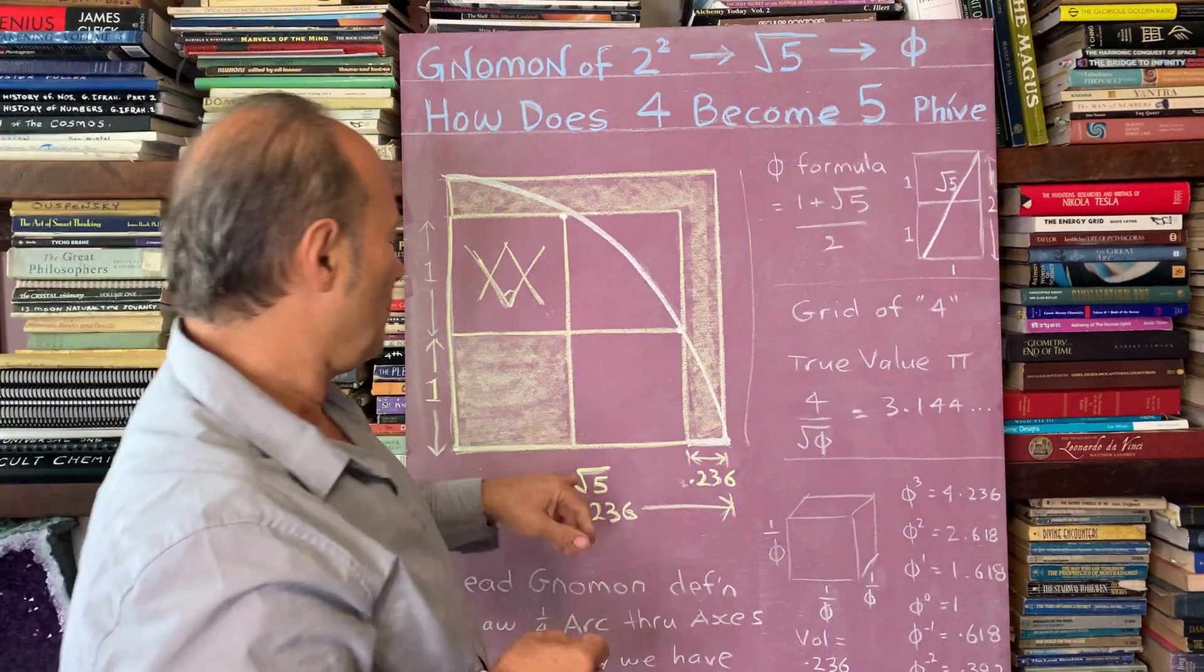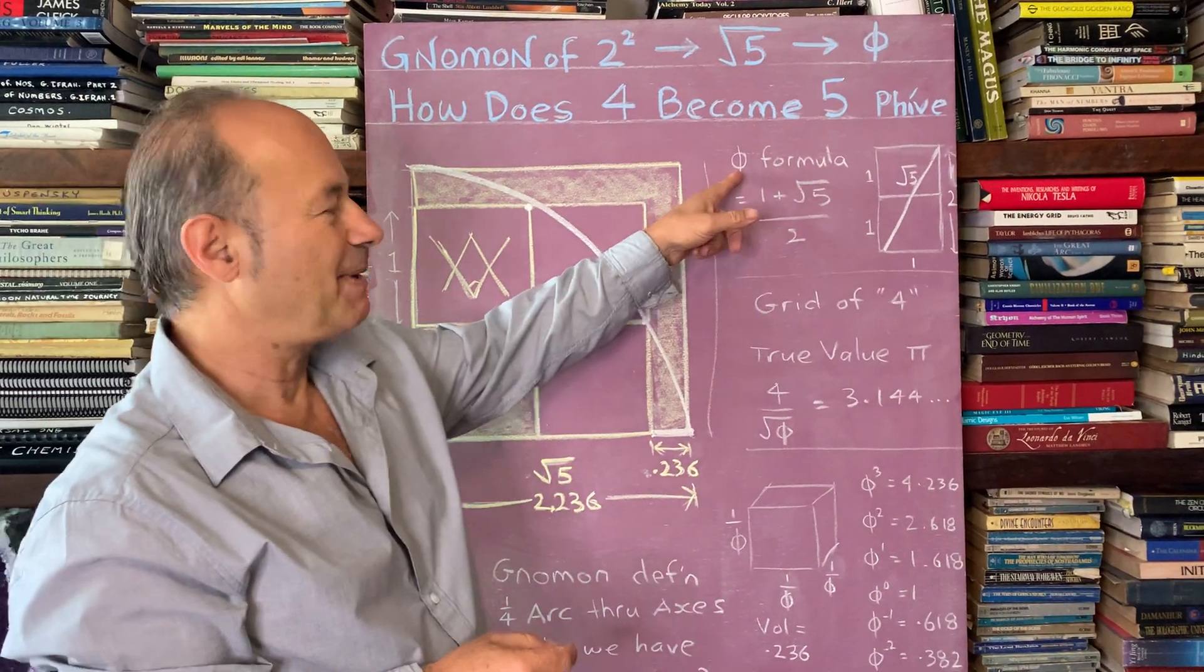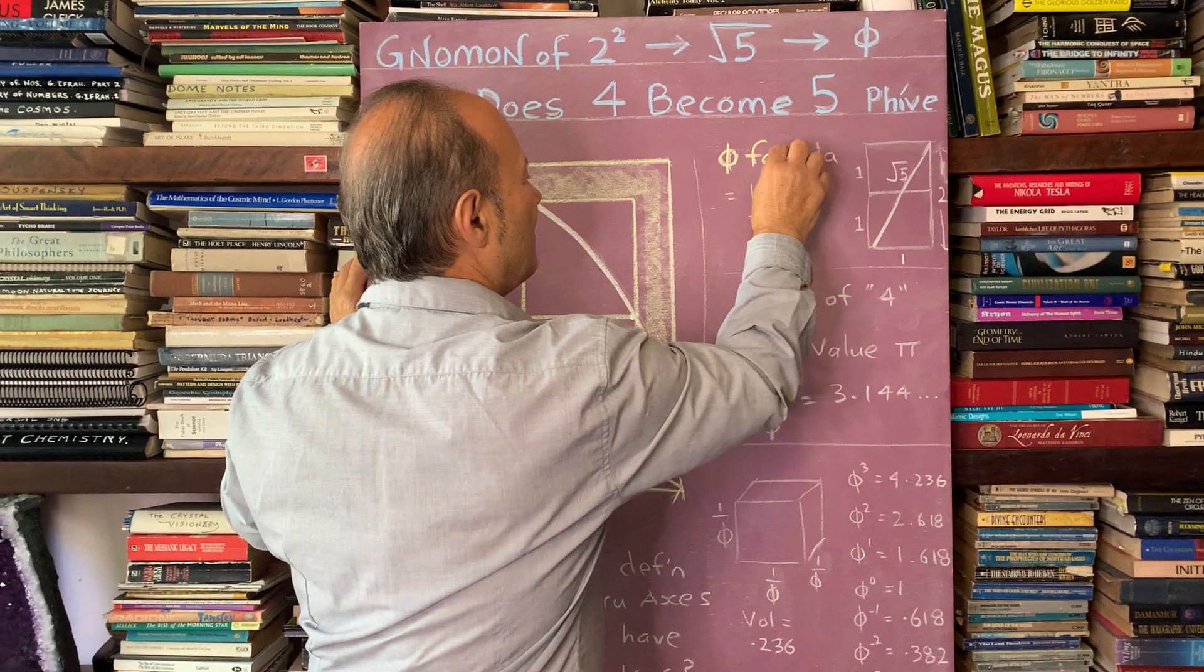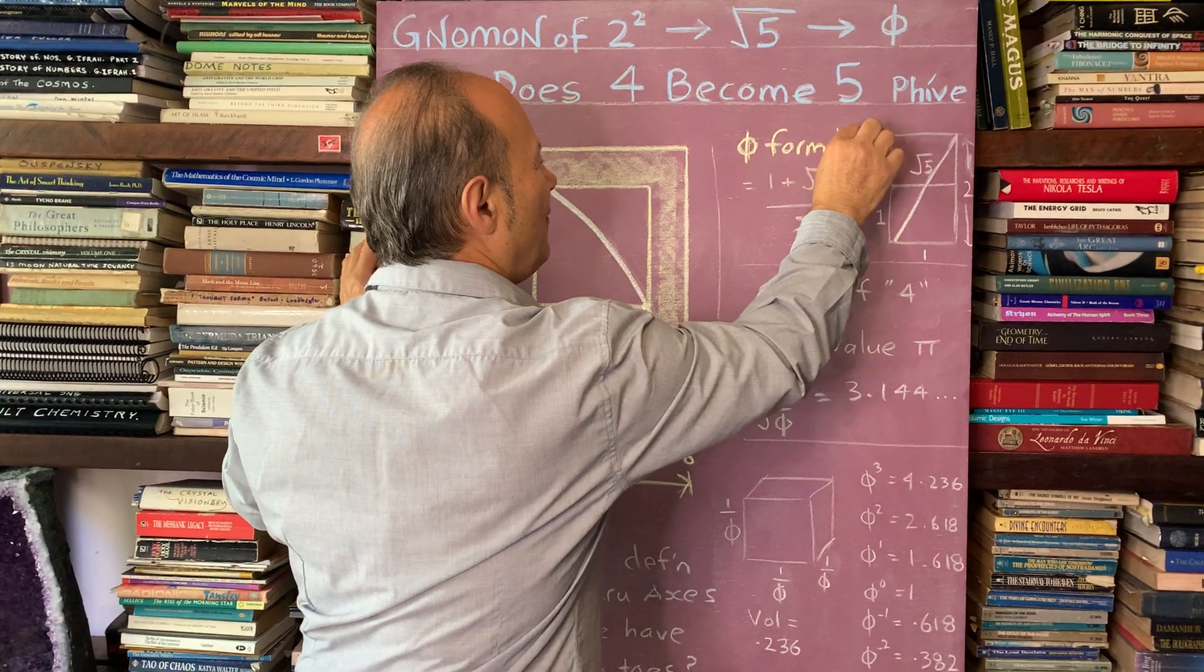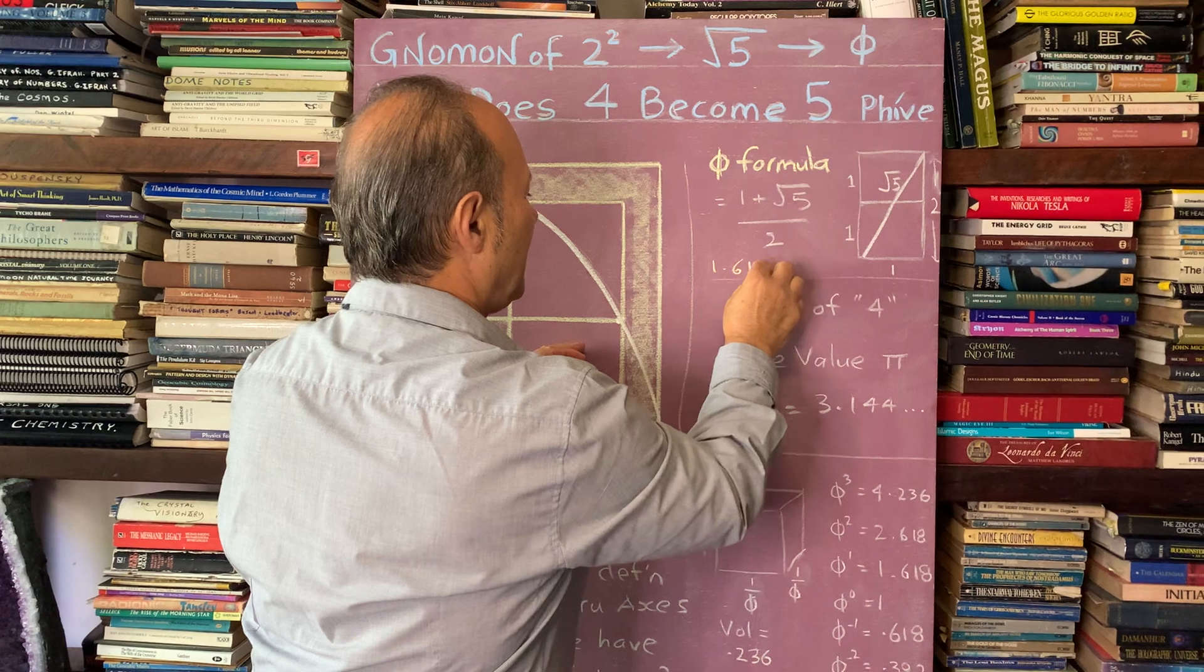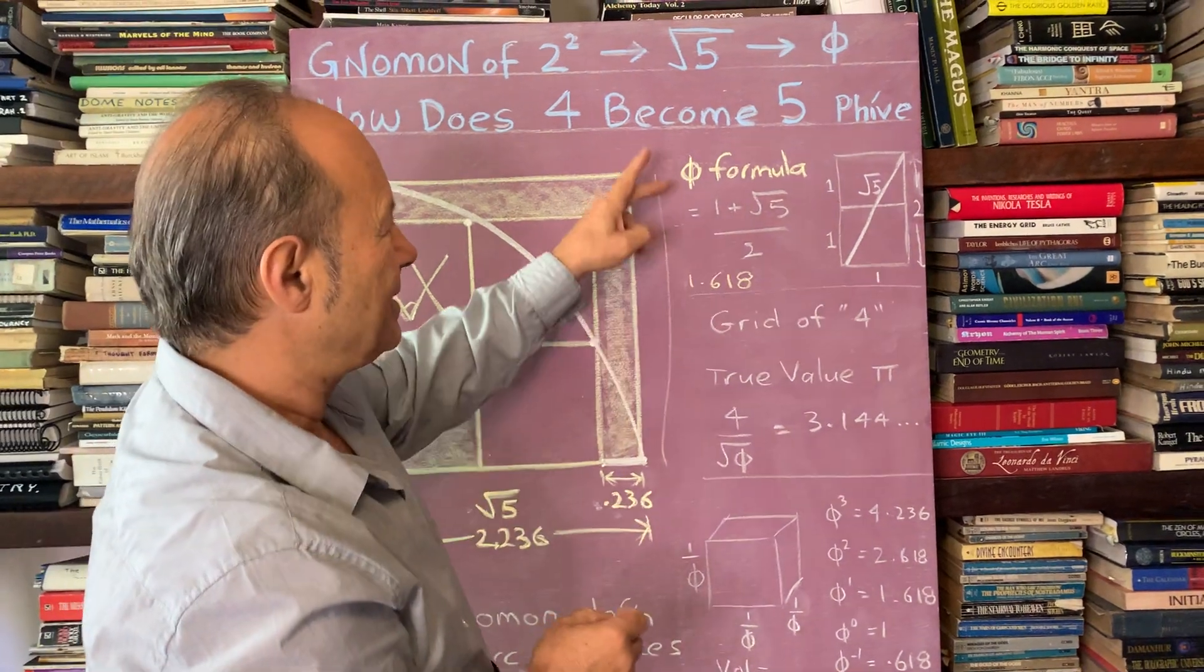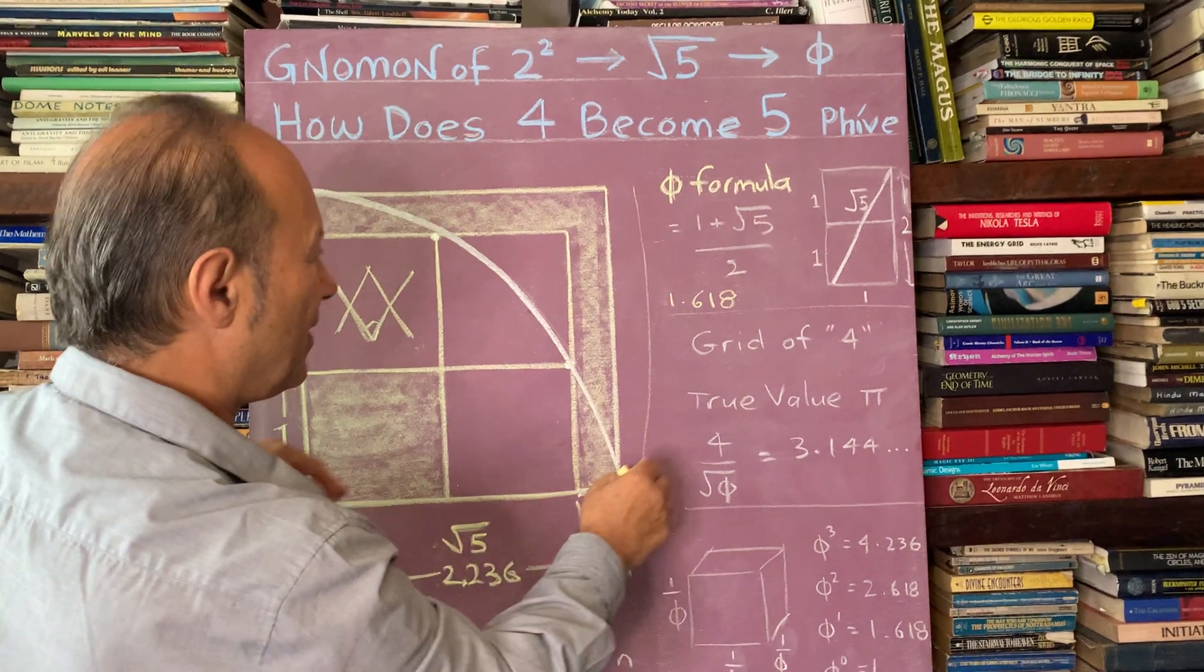The fact that we've got root 5 is very important because root 5 is part of a formula for the universe called the phi ratio. The symbol is a circle with a line through it. The phi formula, which we know is 1.618, and we need to know this in a minute to understand why 0.236 is important, is that the formula for phi involves this distance here, root 5.